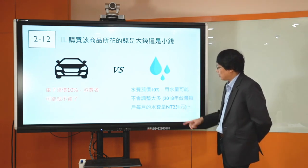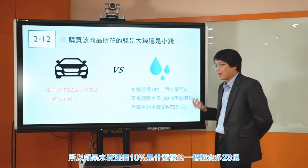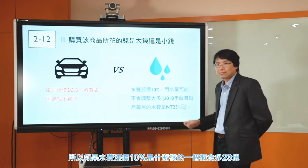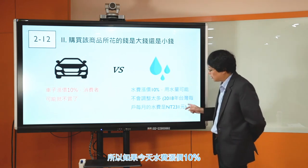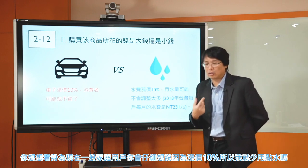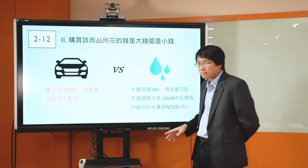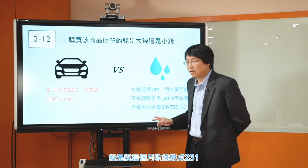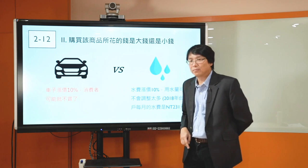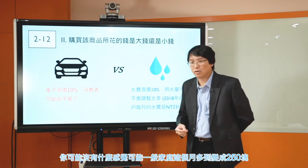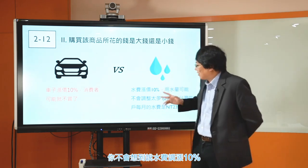水費就是另外一個故事。水費漲價10%是什麼樣的概念？根據2018年台灣每戶每月的水費是231塊，漲價10%就是多23塊，變成254塊。可能一個飯糰都不到。你今天一般家庭用戶，會因為漲價10%就少用點水嗎？可能無感。就是說這個月收到水費突然多了23塊變成254塊，你可能沒有什麼感覺，不大會調整自己的消費習慣。